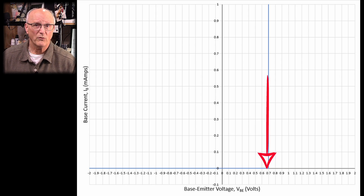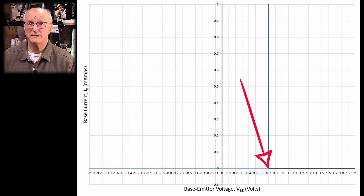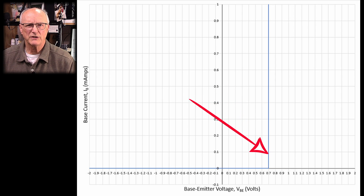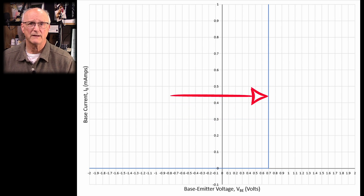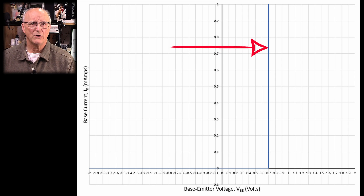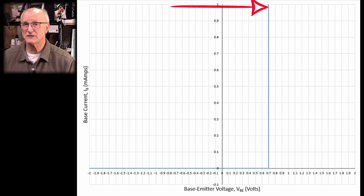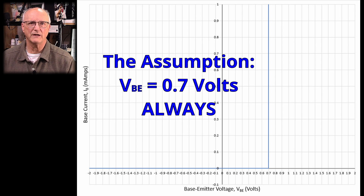Up to this point we have existed in the cutoff region of operation. But eventually we reach a point where the base-emitter voltage is 0.7 volts. The space-charge region of the base-emitter junction has collapsed to the point where current begins to flow into the base and, as a result, current also begins to flow into the collector. Notice that the base-emitter voltage never increases beyond 0.7 volts — the assumption here is that this voltage never changes regardless of the amount of current we are driving into the base.